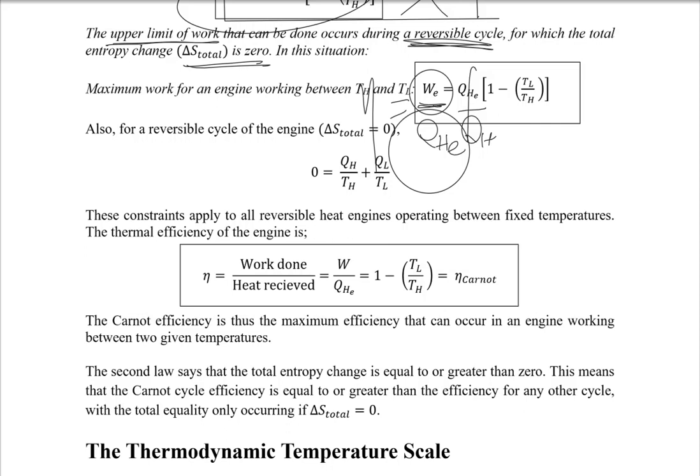In conclusion, the second law states that the total entropy change is equal to or greater than zero, meaning the Carnot cycle efficiency is greater than or equal to the efficiency of any other cycle — whether it is an Otto cycle, Diesel cycle, or any other. The Carnot efficiency represents the upper bound for all real cycles.